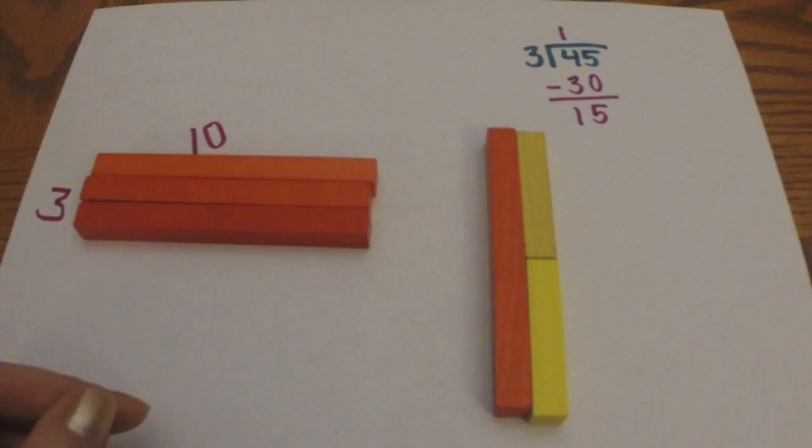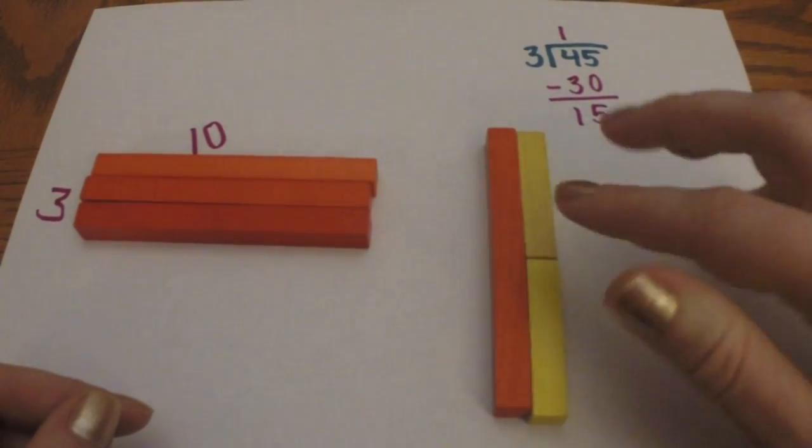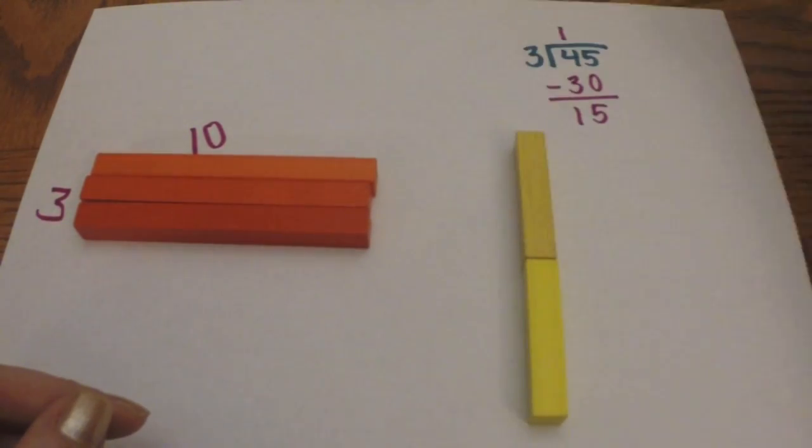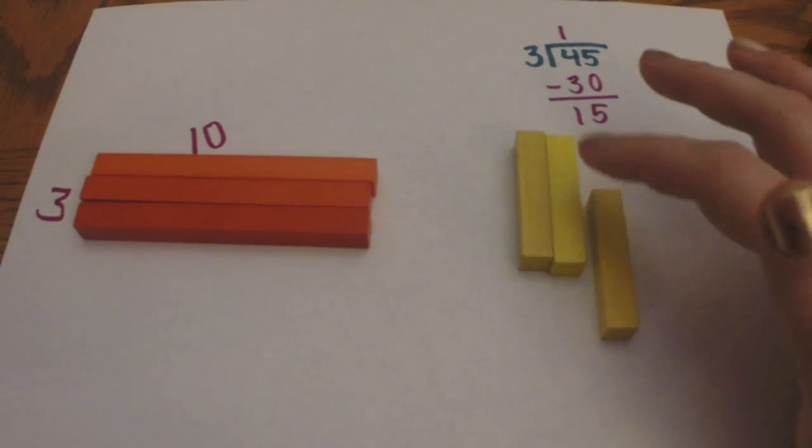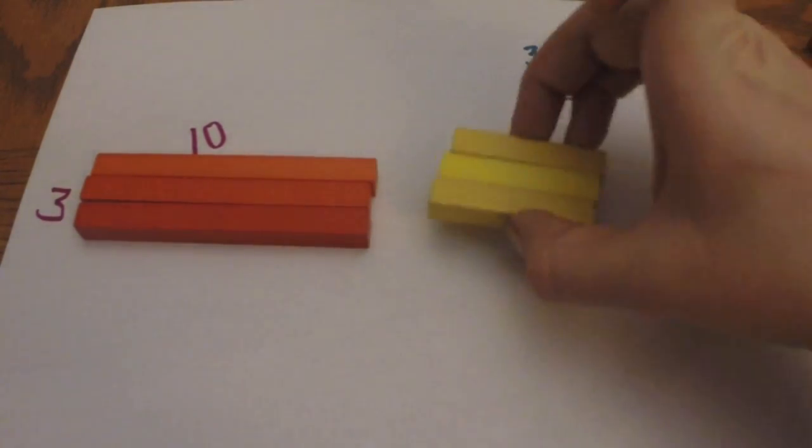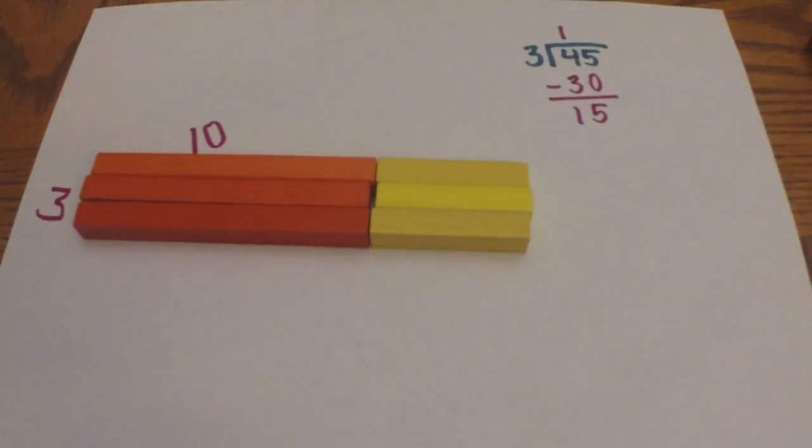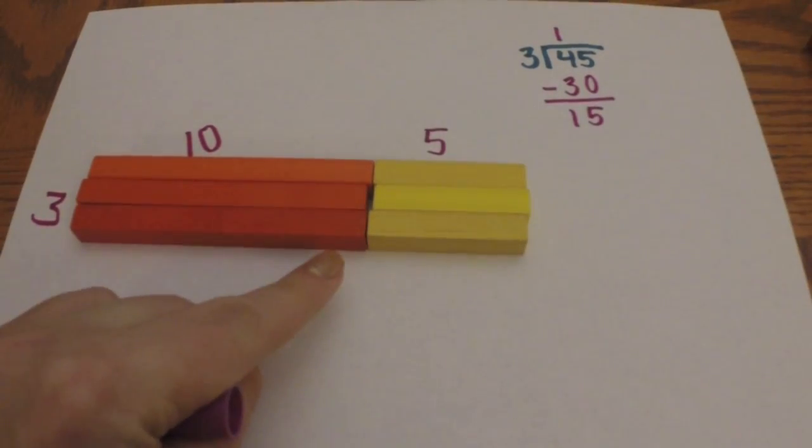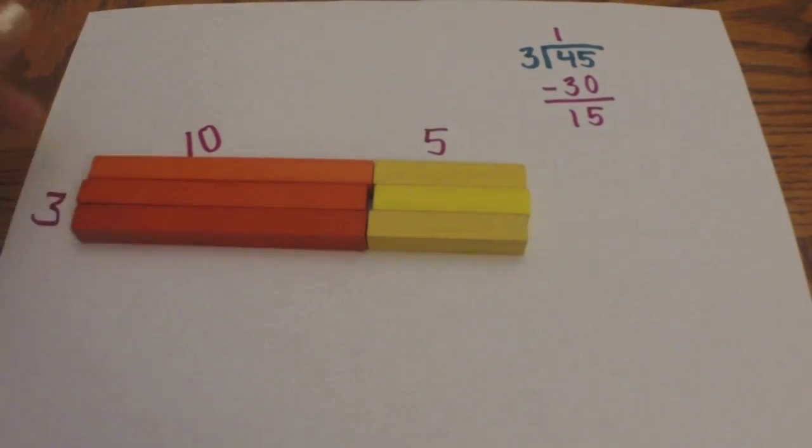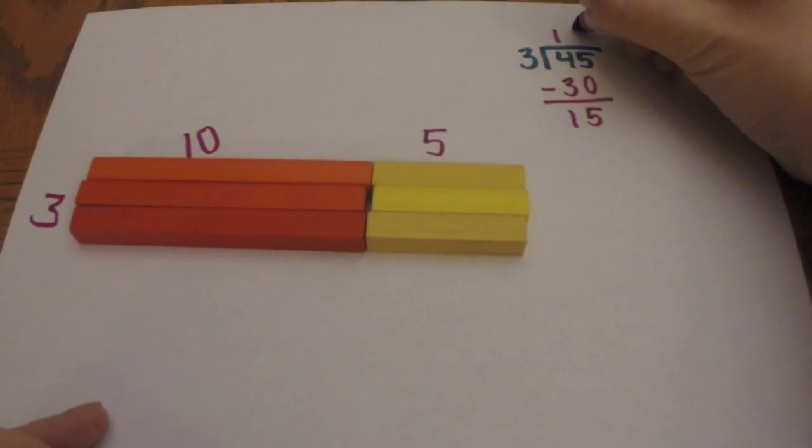So if we trade in our orange rod for those two, then we are still with fifteen left over. But now we can manipulate it a little bit so that we can make another rectangle and we'll put it next to it. So now it is three by five because these are ten units in length, these are five units in length, and there's three of them. And so since we have a five in the ones place, put a five down here.